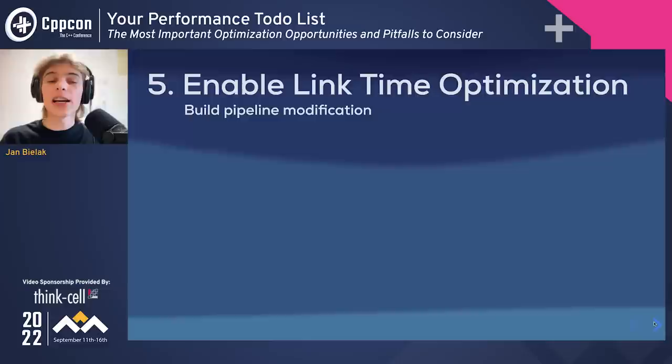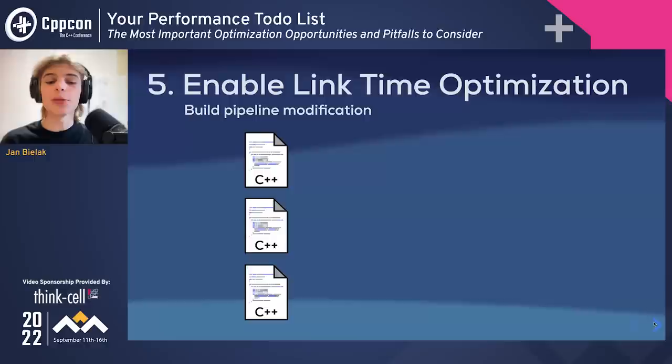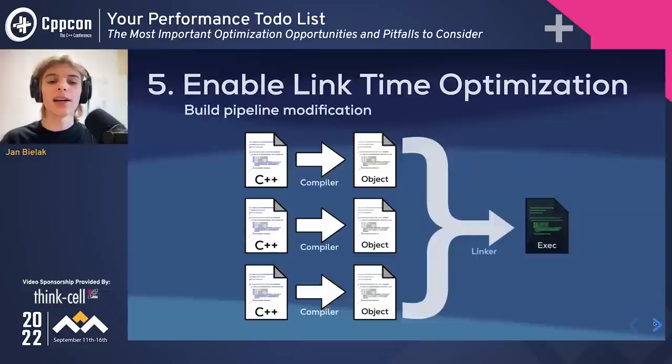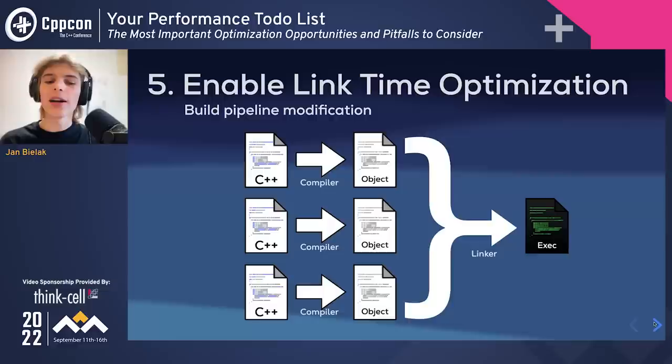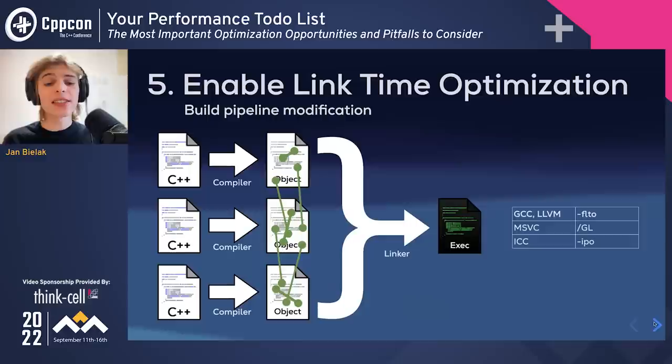Another optimization to consider is link-time optimization (LTO). The idea is that often the compiler has insufficient knowledge to properly optimize code at translation unit boundaries. A C++ program is made up of multiple translation units — each being a single C++ file with all its included headers. During building, translation units are compiled into object files, and only later linked together into a working executable. This means the compiler might not be able to inline a call to a function from a different translation unit, but the linker has the knowledge needed. We can request that it does these optimizations by enabling LTO.